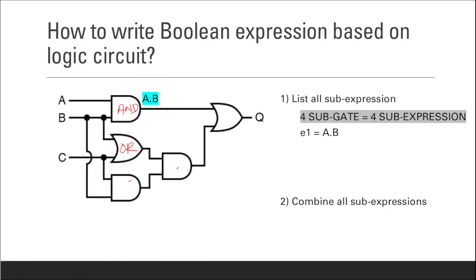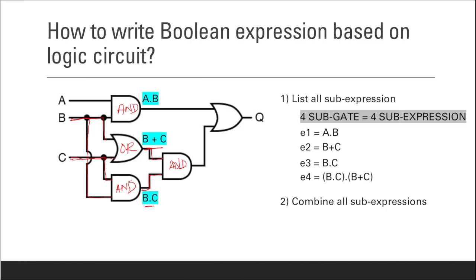The second gate is an OR gate taking inputs B and C, so the second expression is B plus C. The third gate is an AND gate taking inputs C and B, so the third expression is B dot C.